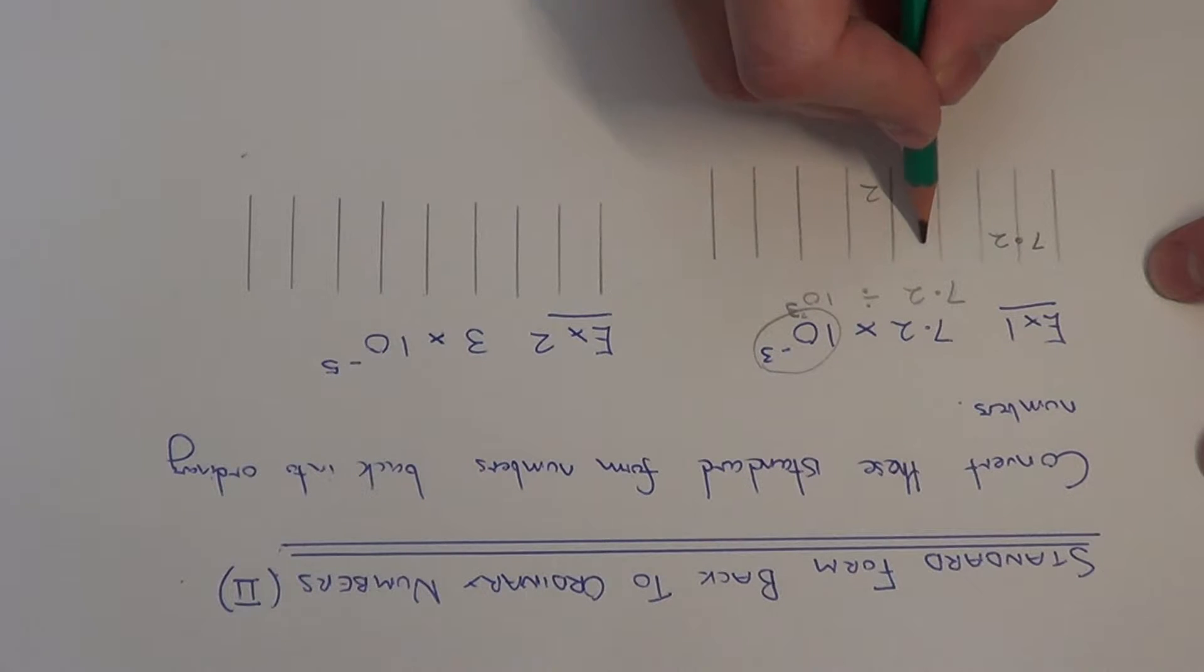The 7 will go 1, 2, 3. The decimal point won't move. And we just need to fill in the gaps between the numbers and the decimal point with zeros. And we always put a zero before the decimal point. So our final answer is 0.0072.